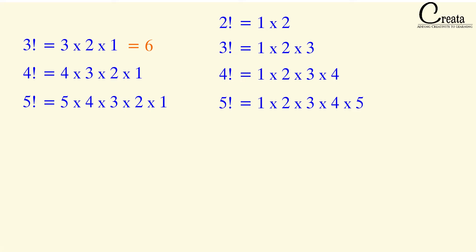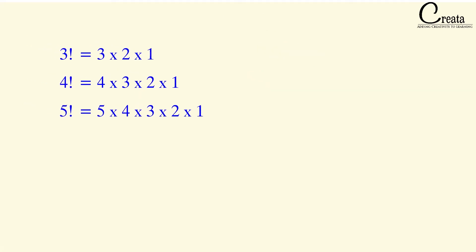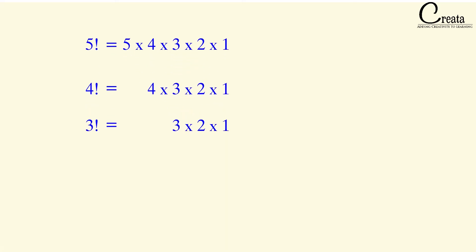Let's observe factorial in further detail by rearranging terms. 5 factorial equals 5 × 4 × 3 × 2 × 1. Can we replace 4 × 3 × 2 × 1 with 4 factorial? Yes — so we can rewrite 5 factorial as 5 × 4!. Similarly, 4 factorial can be rewritten as 4 × 3!, because we replace 3 × 2 × 1 with 3 factorial.